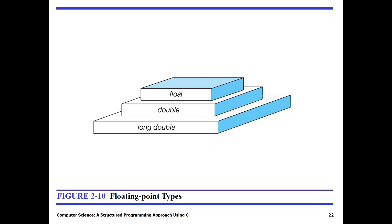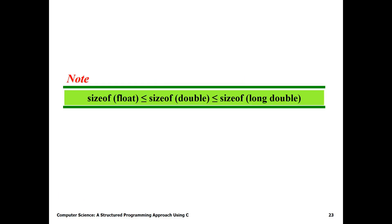Now let's look at the floating point types. We have float, double, and long double, which differ in preciseness and byte size. The size of float is less than or equal to the size of double, and the size of double is less than or equal to the size of long double.